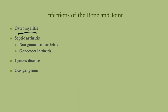We're going to start out with osteomyelitis, by far the most high yield. A close second is septic arthritis, which is not a bone infection but rather a joint infection. We'll talk about Lyme disease, and then we'll have a special feature on gas gangrene, which isn't particularly bone or joint but falls under this category as it pertains to soft tissue more generally.